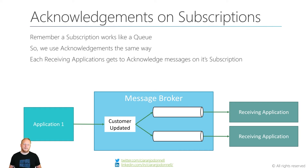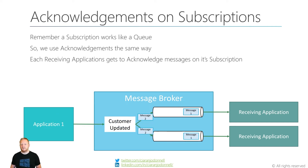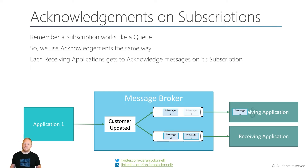We talked last time about how important topics and subscriptions are. A subscription works like a queue, and so like a queue the acknowledgements work in the exact same way. Each receiving application gets to acknowledge messages on its own subscription. Here we see messages flowing into a topic, getting spread out to the queues, delivered to the receiving application that's processing it, and then it gets to acknowledge that message and have it removed from its subscription, which is effectively like an incoming queue.